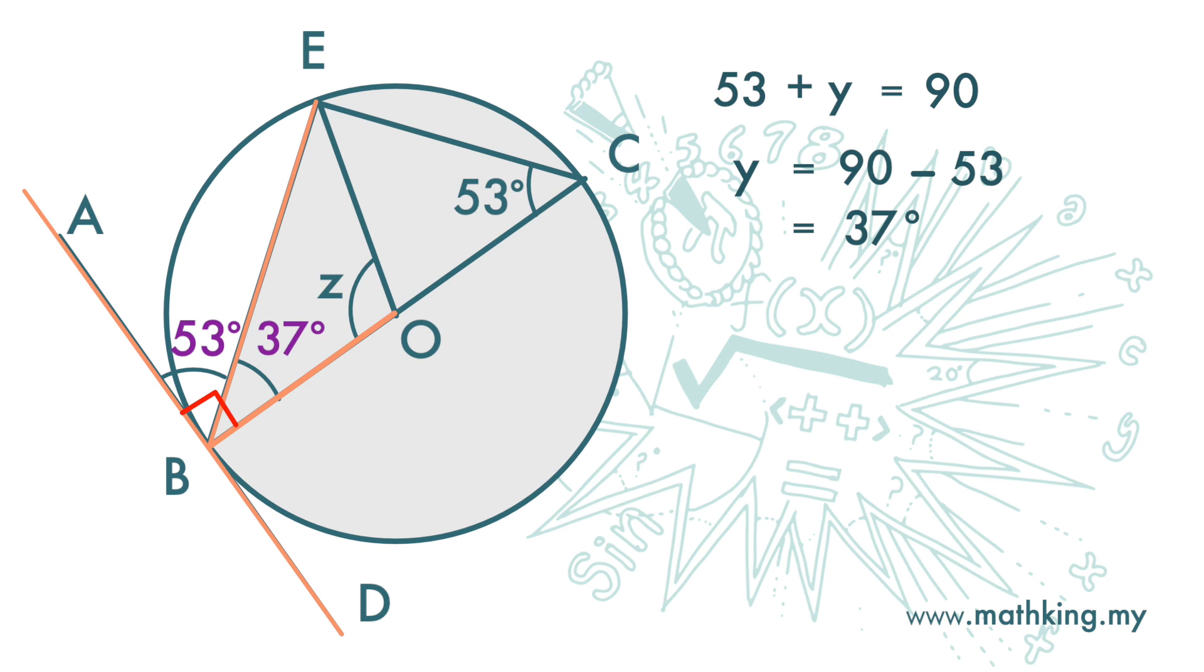Next we want to find z. z is an angle at the center subtended by this arc. This same arc also subtends an angle at the circumference.